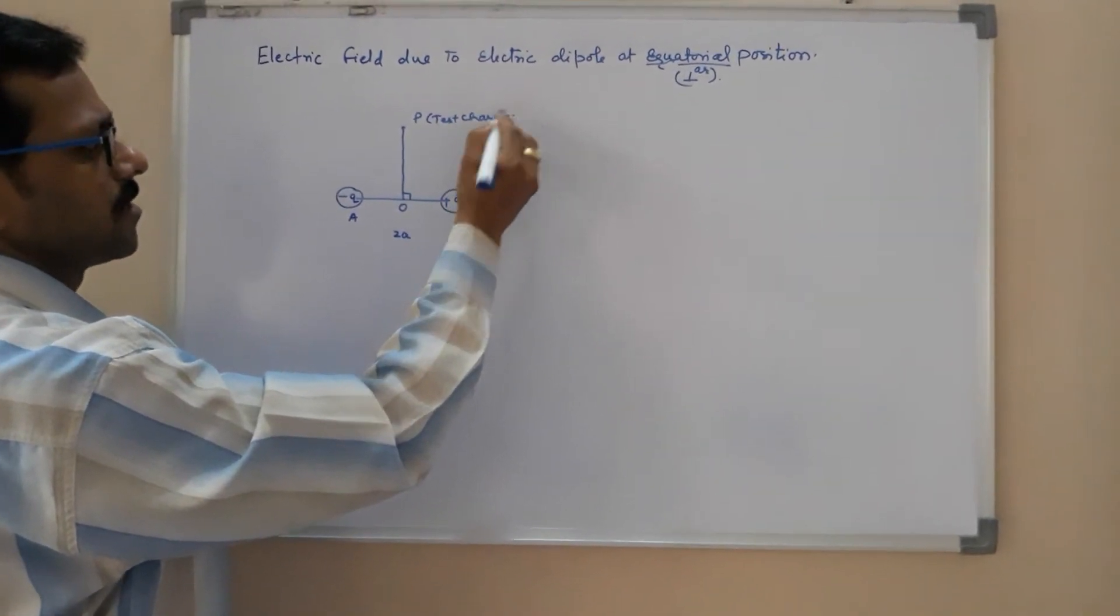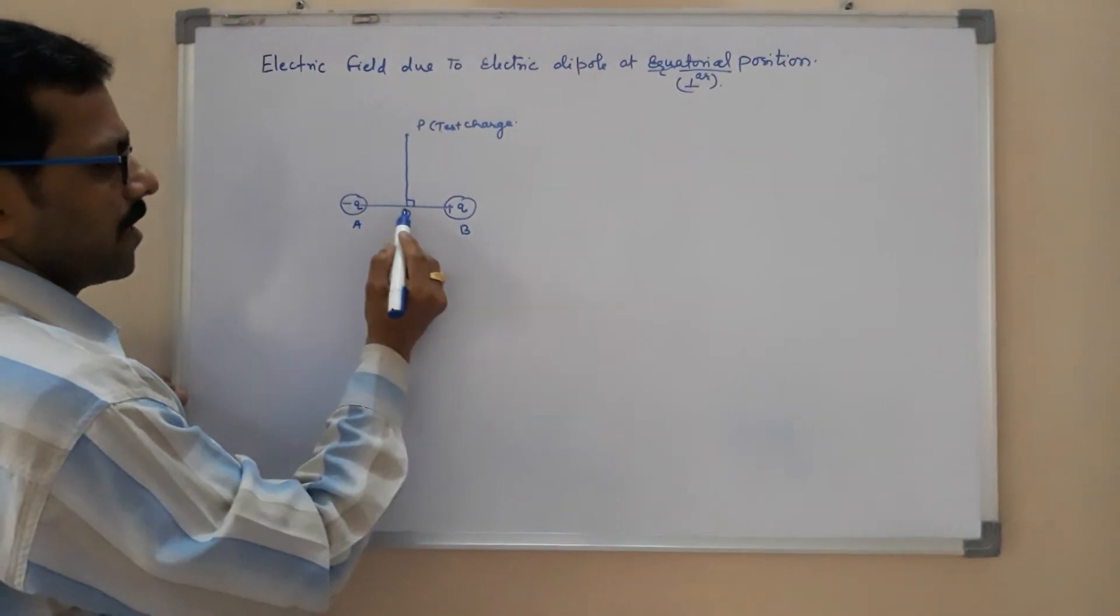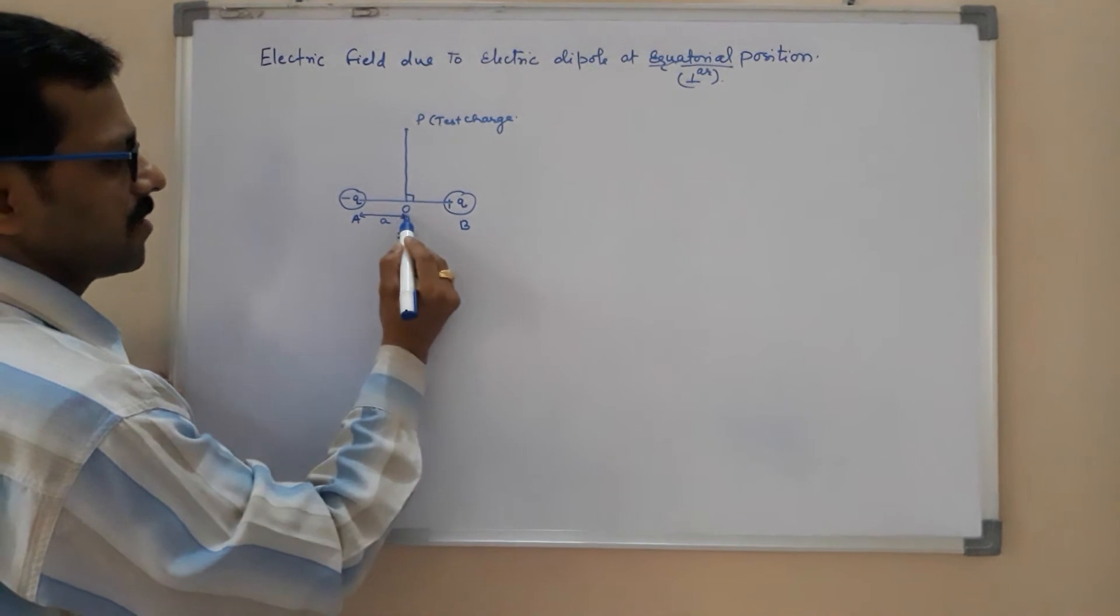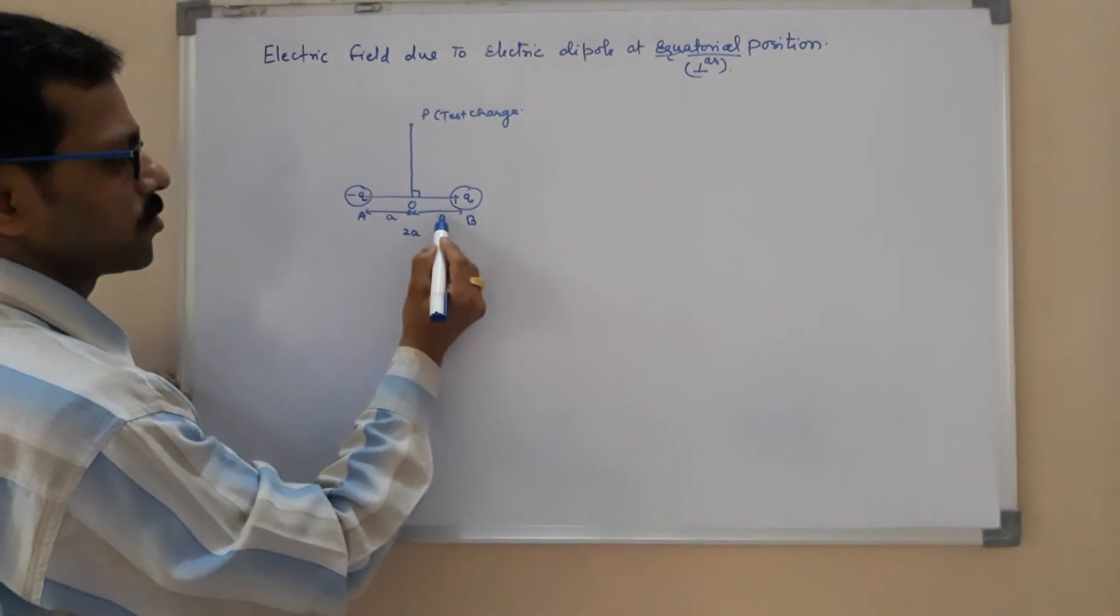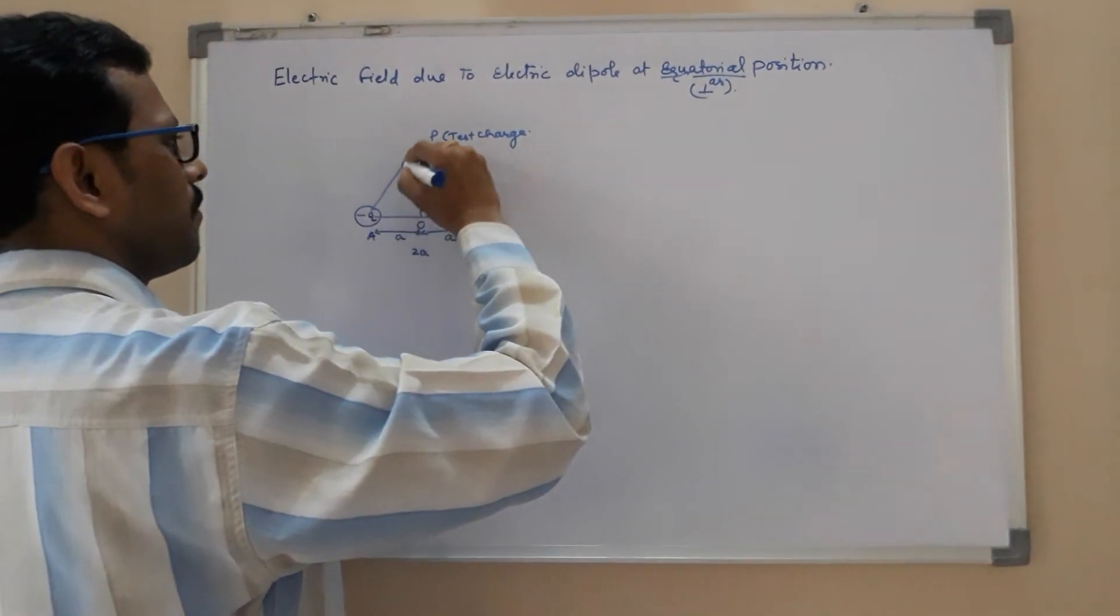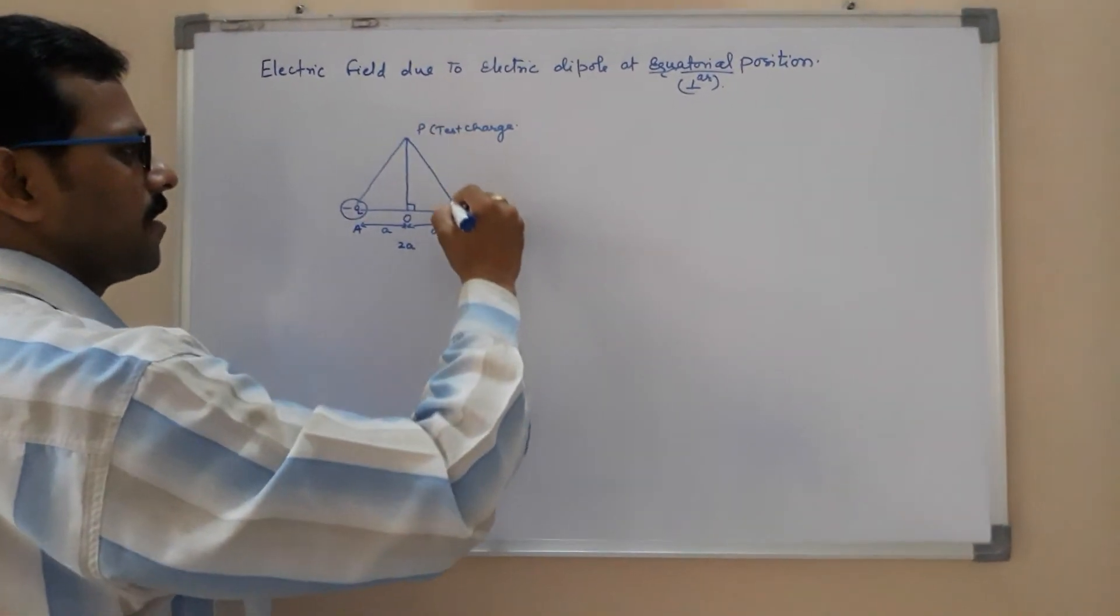Now what is next? If O is the midpoint, then AO is A, small a, and OB is also A. Now join the point A with P and join the point P with B.